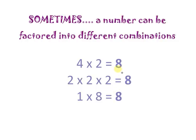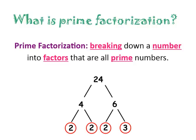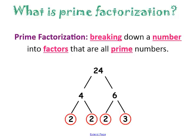Keep in mind you can use multiple combinations to equal the same number: 4 times 2 is 8, 2 times 2 times 2 is 8, 1 times 8 is 8, and so on. So what is prime factorization? It's that factoring process of breaking down the number, but this time breaking it down so that you only get prime numbers.